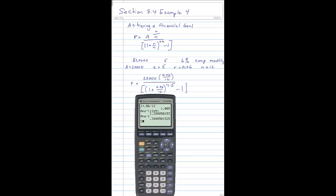All right, now I'm going to look at the numerator. The numerator is 20,000 times 0.06 divided by 12. Okay, now I'm going to divide that by that 0.348850.